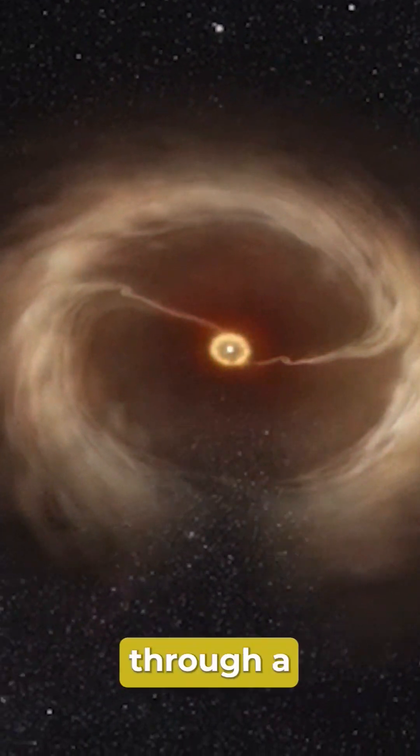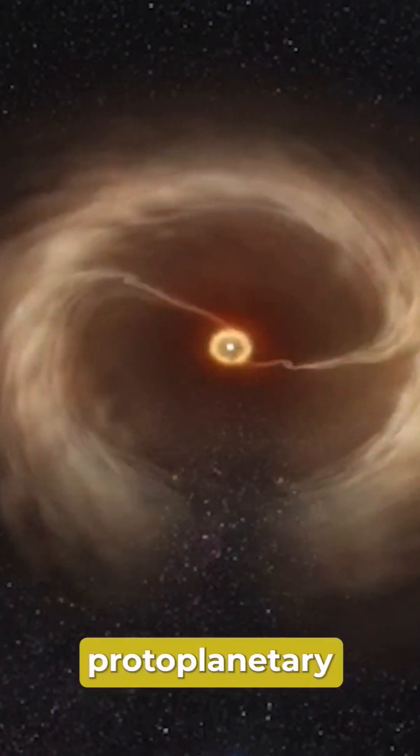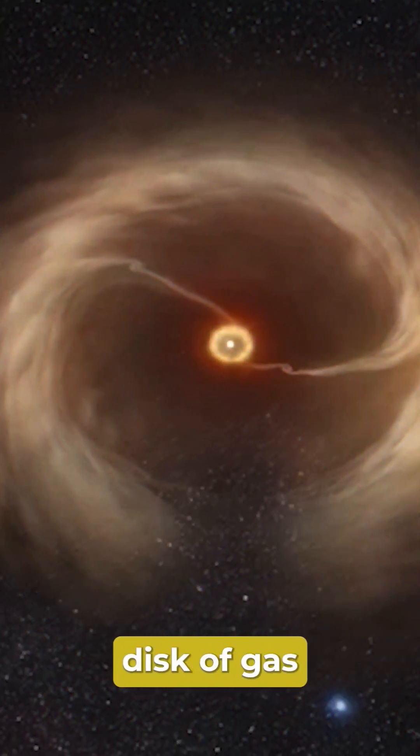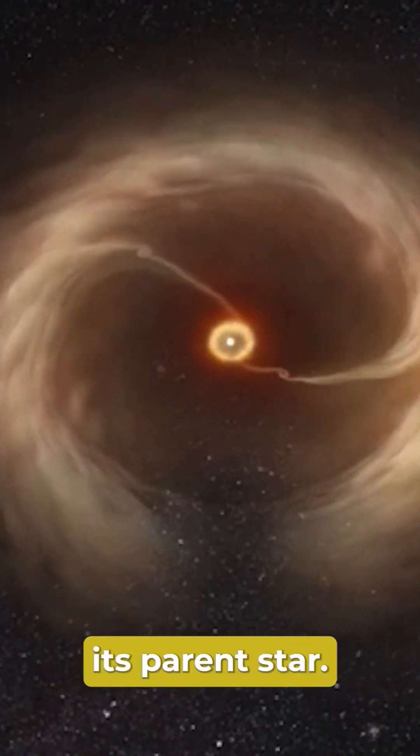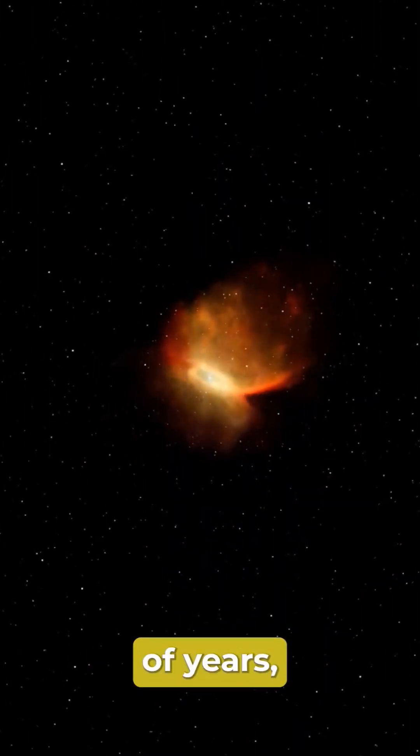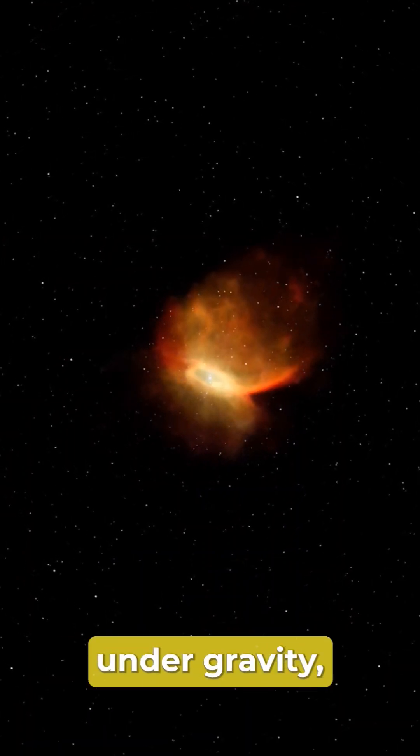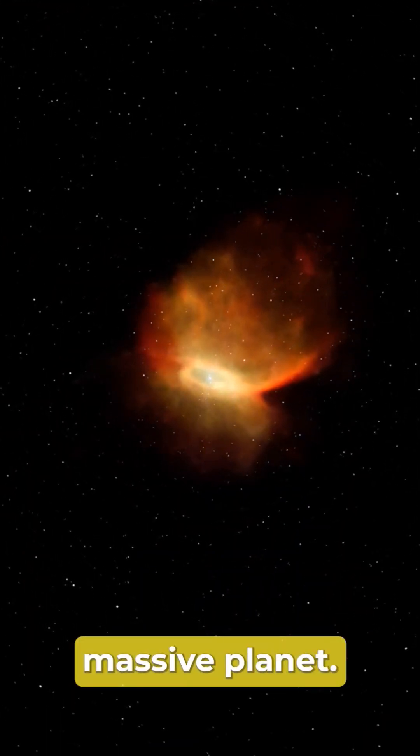ROXS 42BB formed through a fascinating process within a protoplanetary disk, a swirling disk of gas and dust surrounding its parent star. Over millions of years, the material in the disk clumped together under gravity, giving rise to this massive planet.